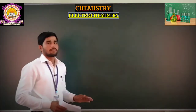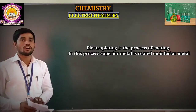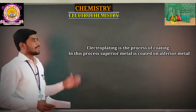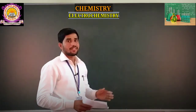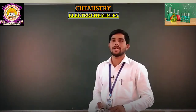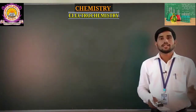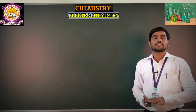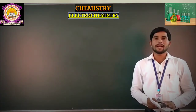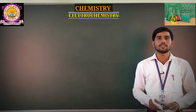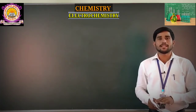Electroplating is nothing but a process of coating an inferior metal with a superior metal — that is, coating of a superior metal is done on the inferior metal.